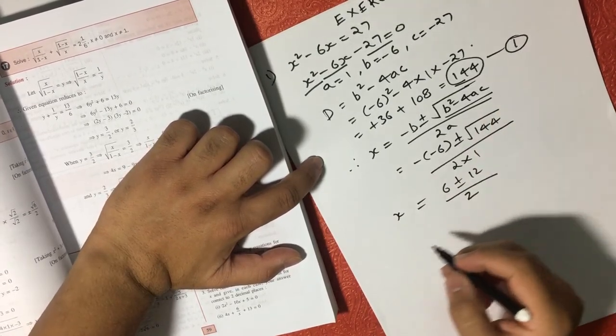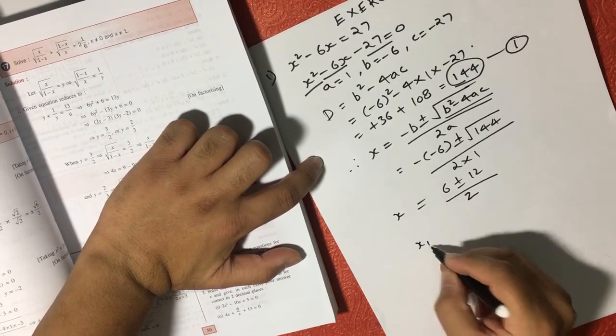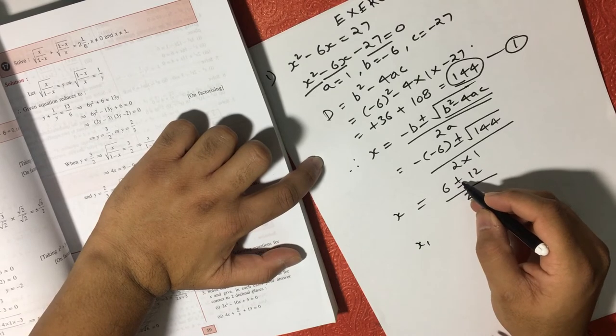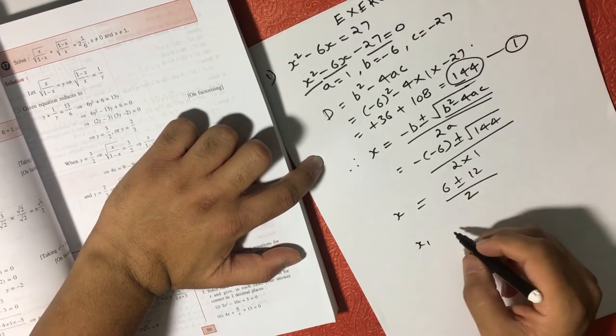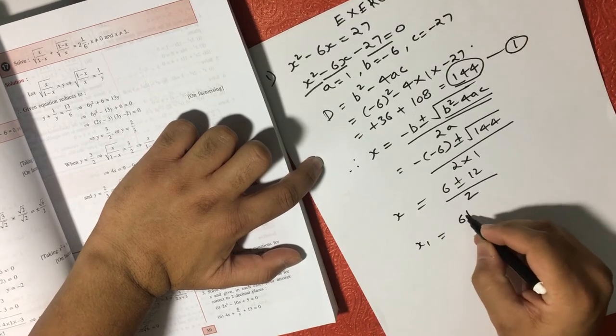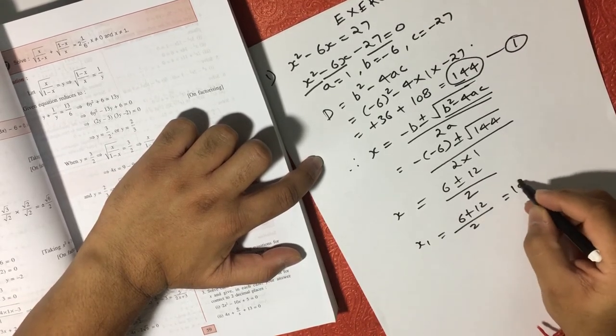Now here if we can see, there will be 2 possible values of x, one is x1 if we consider 6 plus 12 and another will be 6 minus 12, so let's try to solve both. 6 plus 12 oblique 2 is equal to 18 by 2,